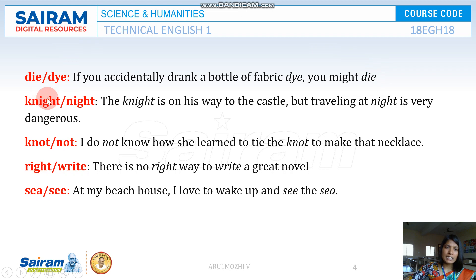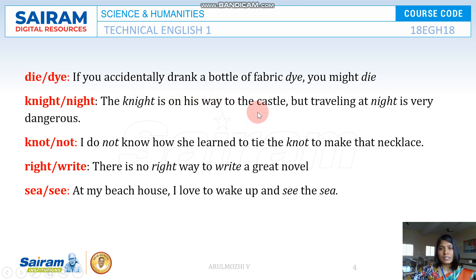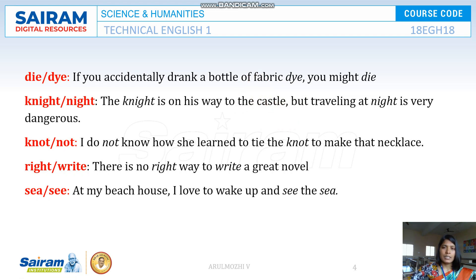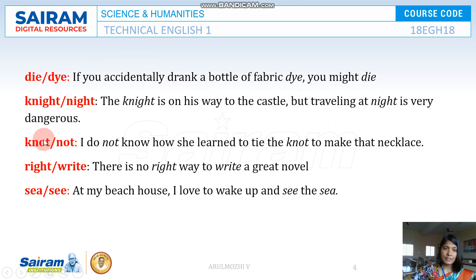Next is KNIGHT and NIGHT. KNIGHT is a warrior or soldier — in olden days, a gentleman who protects and takes care of a mansion or castle. NIGHT is the time of day, as in day and night. For example, the knight is on his way to his cousin's, but traveling at night is very dangerous.